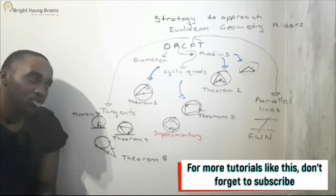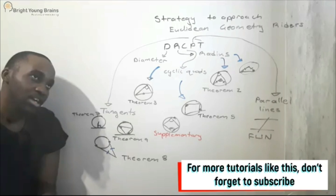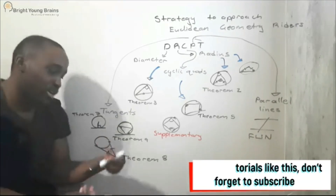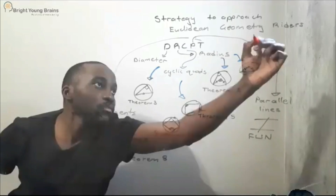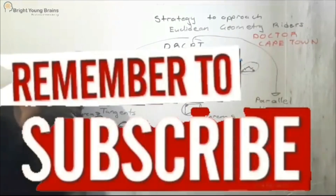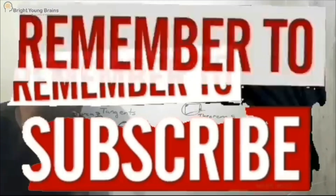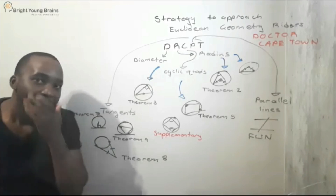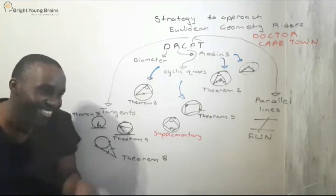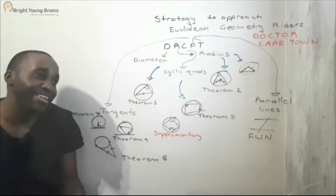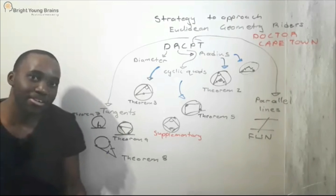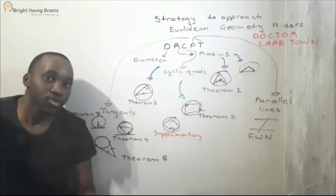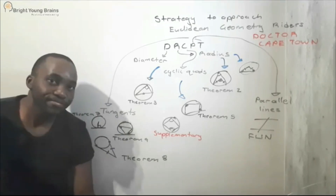So with DR CAPE TOWN: D — think of diameters and Theorem 3; R — radius lines, Theorem 2, and isosceles triangles; C — cyclic quads with their laws; P — parallel lines and FUN; T — tangents with multiple theorems. This method will help you remember what to look out for in any Euclidean geometry question. I hope this method helps your marks — catch you in the next tutorial!